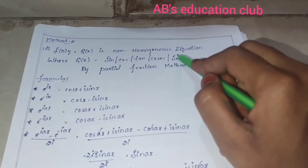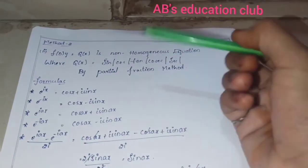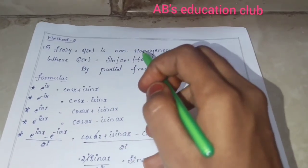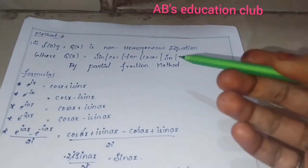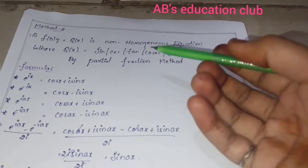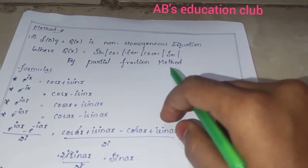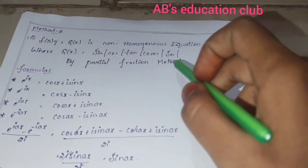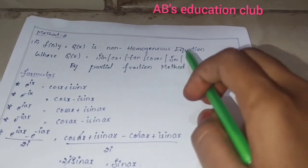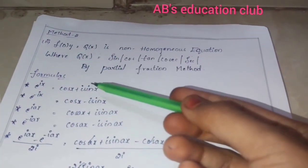Method 2, second model: f(D)y = Q(x) is a non-homogeneous equation. Here Q(x) can contain functions like sin θ, cos θ, tan θ, sec θ, cot θ. We find yc(x) first, then yp(x) = [1/f(D)]·Q(x) using the variation of parameters / partial fractions method. This will be demonstrated in the next video problem.